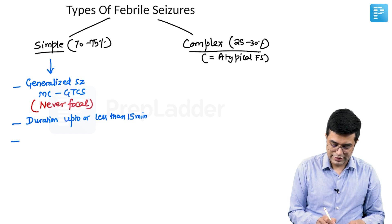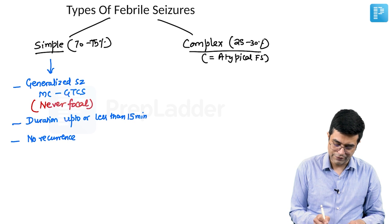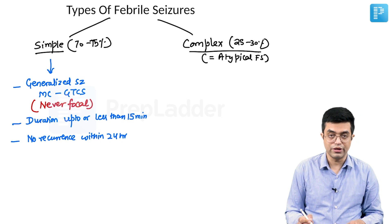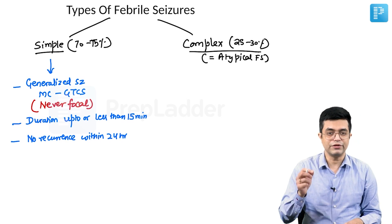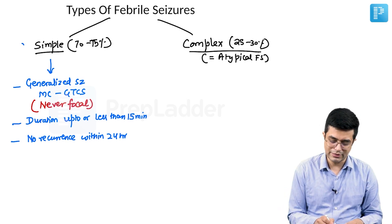And the third feature: there will be no recurrence of the seizure within 24 hours. Once a seizure has happened and aborted, another seizure will not happen within the next 24 hours. They are called simple febrile seizures.